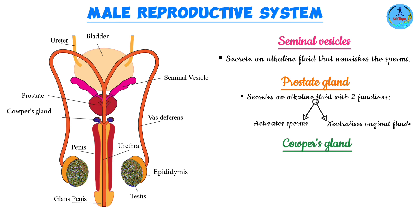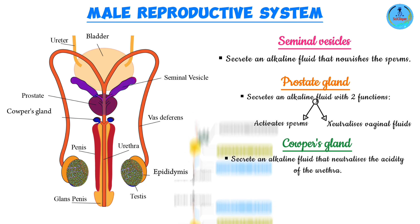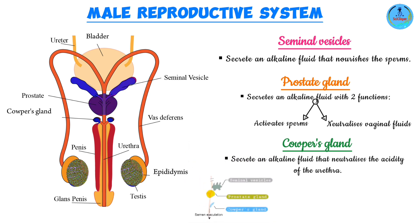The Cowper's glands are located below the prostate gland and also secrete an alkaline fluid that neutralizes the acidity along the urethra. Since the urethra acts as a passage for both semen and urine, and urine has a low pH — slightly acidic — the alkaline fluid neutralizes this acidity, ensuring that the conditions are optimal for the functioning and activity of the sperm. All of the fluids produced by these three glands together with the sperm cells make up the semen.